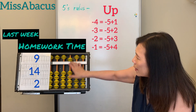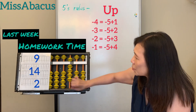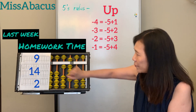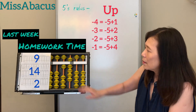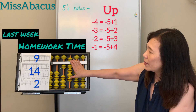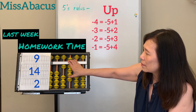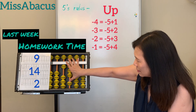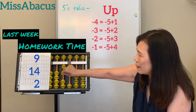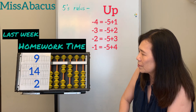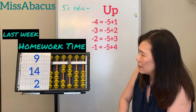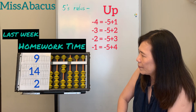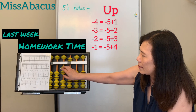Number 33: 9 plus 14. Left to right — do 10 first, then the 4. Nothing, so use 10's rule: take away 6, plus 10. That's the 4's rule. Then plus 2, now 3. Answer: 25.